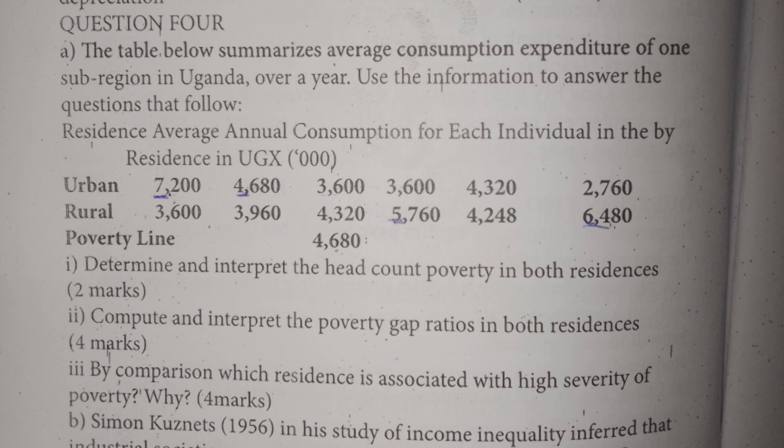Welcome to my channel. We are going to look at calculations in poverty, and the first one is called the head count ratio. The question says: the table below summarizes average consumption expenditure of one sub-region in Uganda over a year. Use the information to answer the questions that follow. The table shows average annual consumption for each individual, with figures in thousands, for the urban area, the rural area, and the poverty line.